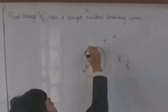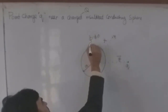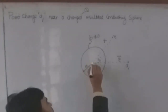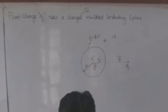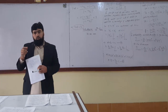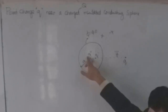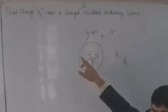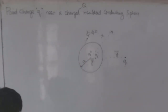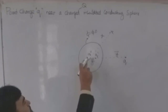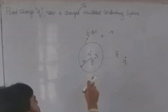If the potential φ is non-zero on the surface, it means the sphere has some charge on its surface. By symmetry, for mathematical convenience, I will consider that charge to be placed at the center of the sphere rather than on its surface — this makes the calculation easier. So we effectively have three charges: the source charge Q, the induced image charge Q', and an additional charge Q'' representing the charge on the sphere.